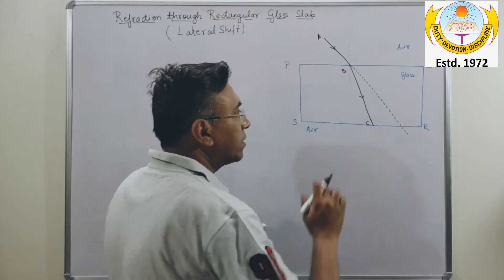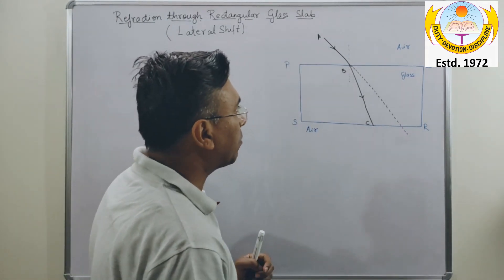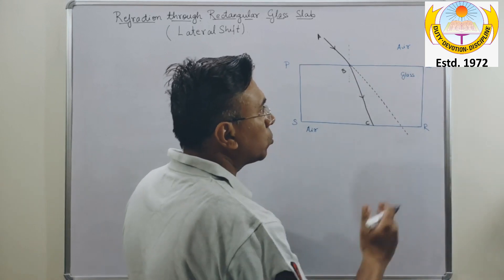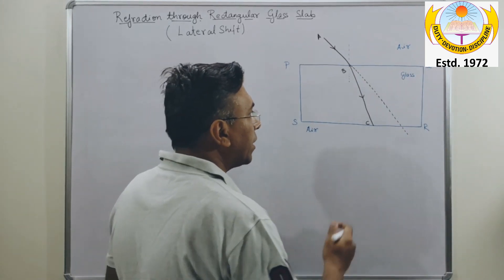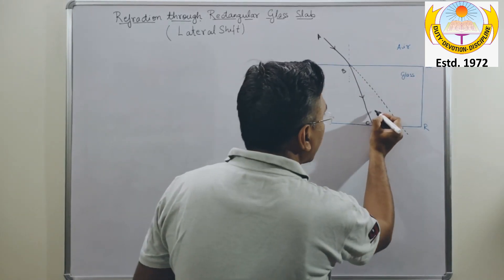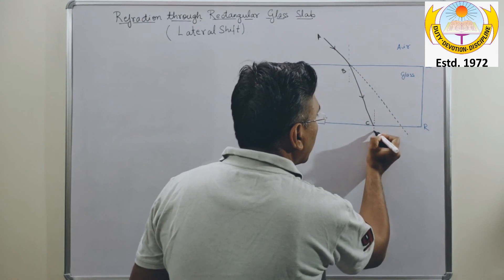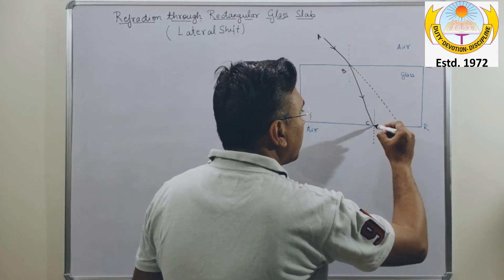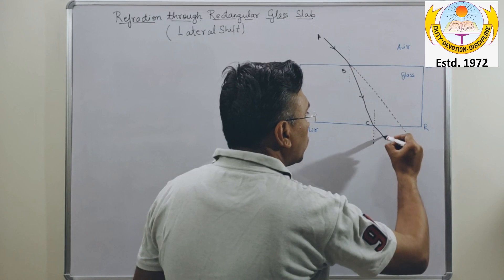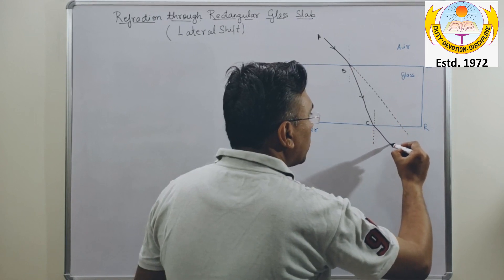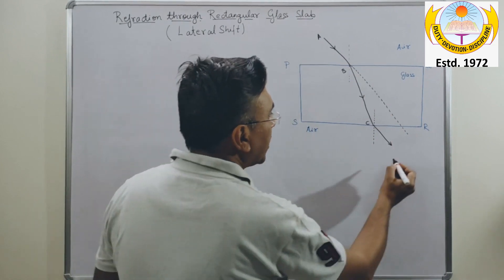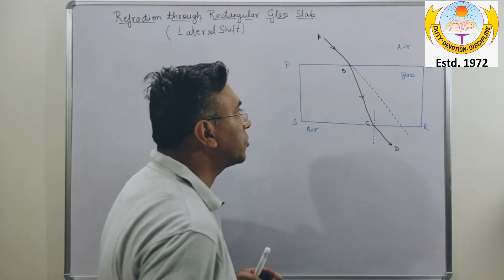At surface SR, refraction takes place again and the light comes out into the medium air. The emergent ray coming out is called CD.